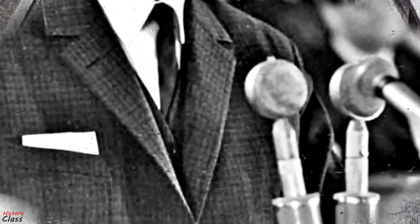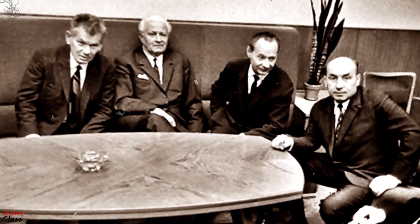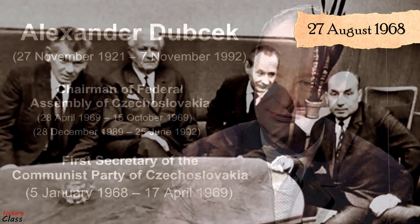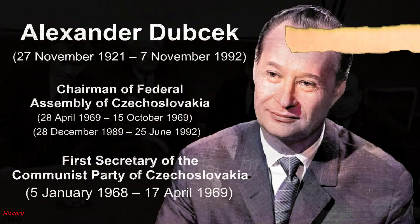Alexander Dubček called upon his people not to resist. He was arrested and taken to Moscow along with several colleagues. Dubček and most of the reformers were returned to Prague on 27 August, and Dubček retained his post as the party's first secretary until he was forced to resign in April 1969 following the Czechoslovak hockey riots.